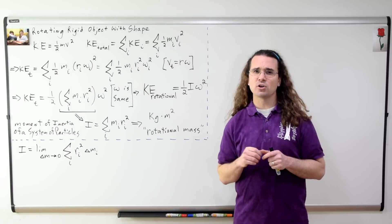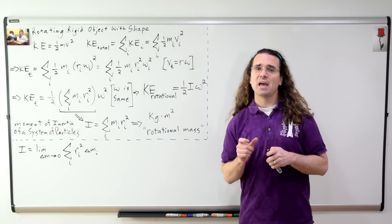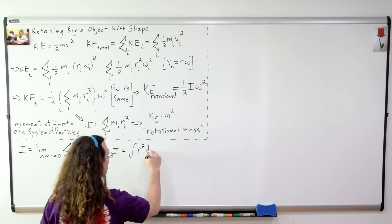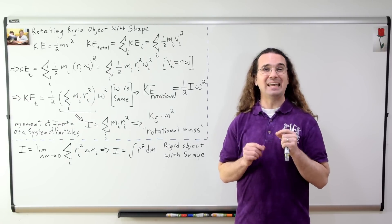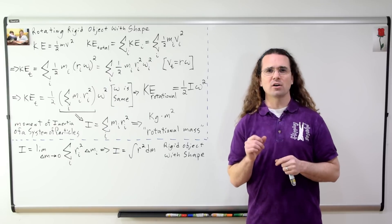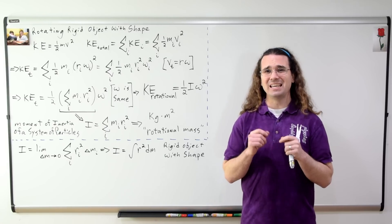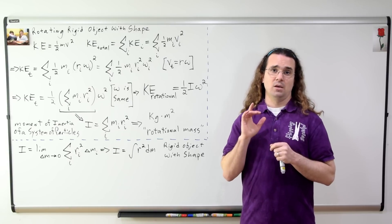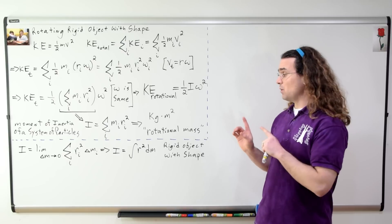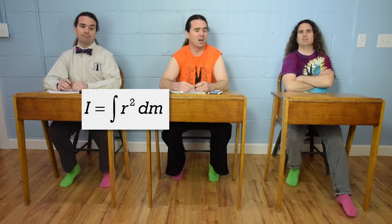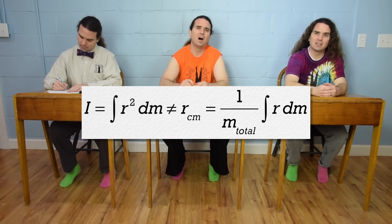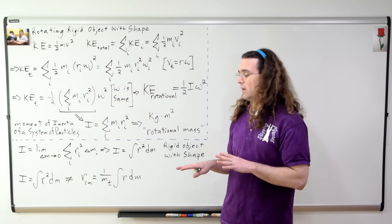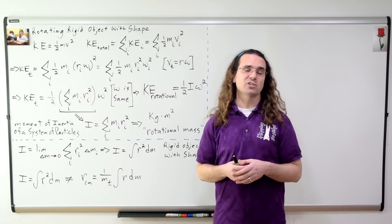If we take the limit of the equation for the moment of inertia of a system of particles as the mass of each particle becomes infinitesimally small, we have the definition of an integral. The moment of inertia of a rigid object equals the integral of r squared with respect to mass, where r is the distance each infinitesimally small piece is from the axis of rotation. Bo, which equation do you think people often confuse this with? That looks a lot like the equation for the position of the center of mass: r_cm equals one over M_total times the integral of r with respect to mass. Those two equations look very similar and are often accidentally interchanged — please don't.